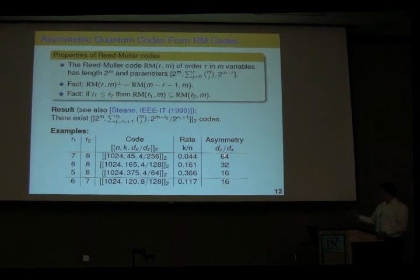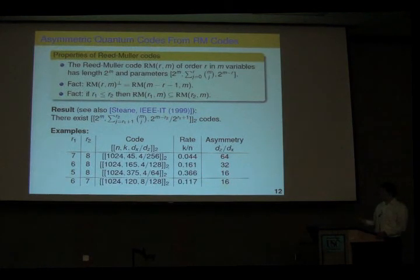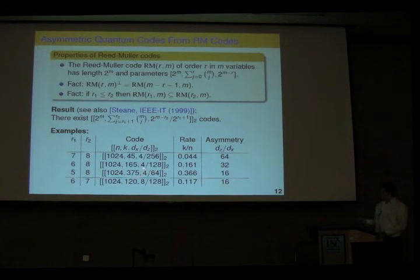You can list these codes for small lengths and see that they show asymmetry. There is a trade-off between rate and asymmetry: if you're happy with a smaller asymmetry, you can get a higher rate; if you insist on a larger asymmetry, your rate will also be lower.